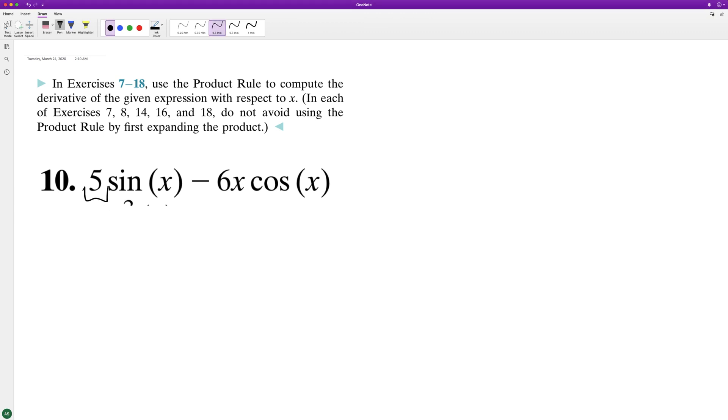5 is just a constant, so we don't need to use the quotient rule. So we end up with 5. The derivative of sine is just cosine of x, and then minus...